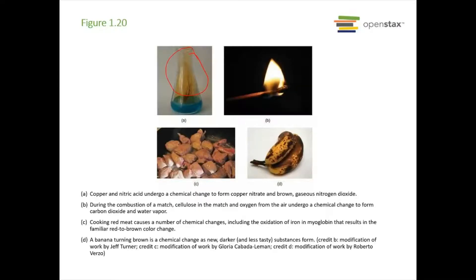When you have a chemical change, the physical properties also change because a new chemical with new properties has formed. When nitric acid and copper combine, we form copper nitrate — that blue liquid — and that brown gas. The banana went from yellow to brown because a new compound formed.